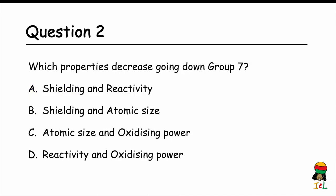Question 2: Which properties decrease going down Group 7? A. Shielding and reactivity. B. Shielding and atomic size. C. Atomic size and oxidizing power. D. Reactivity and oxidizing power. The answer is D — reactivity and oxidizing power decrease going down Group 7.